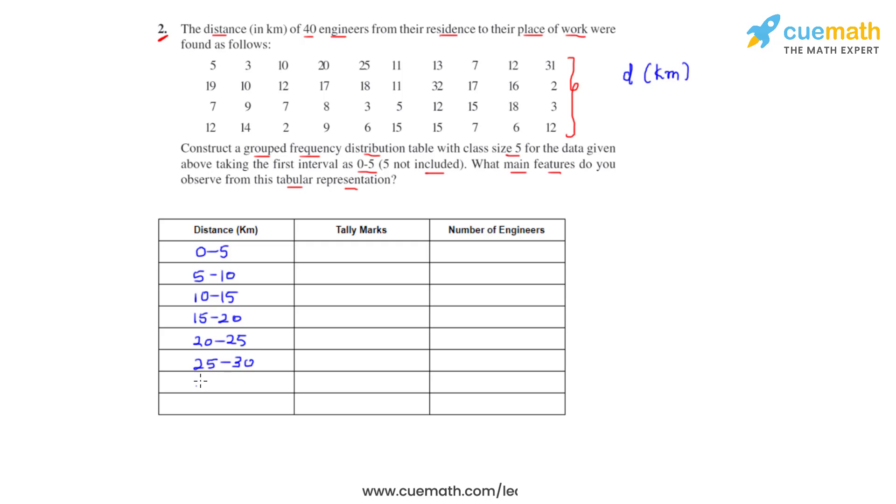Now we will have to see how many engineers fall into these different class intervals that we have made. In the first class interval we can see that there are a total of five engineers.